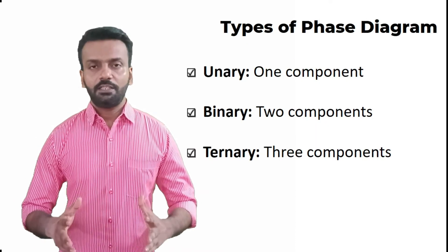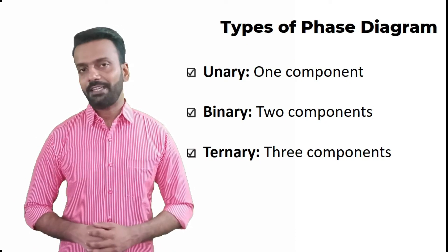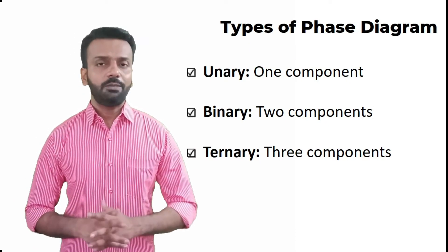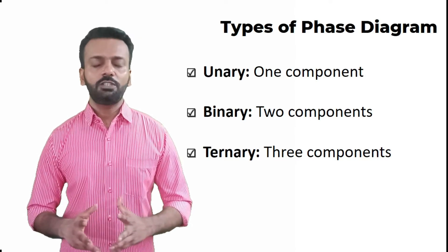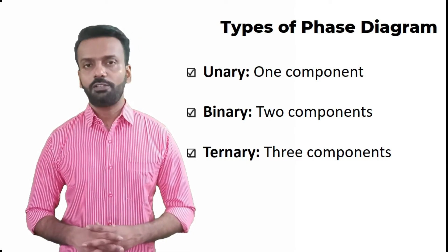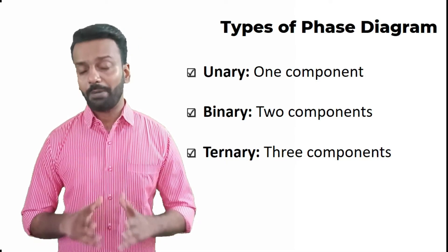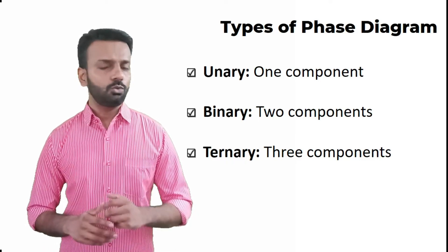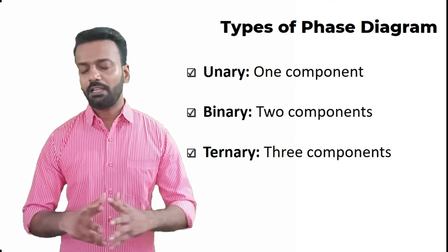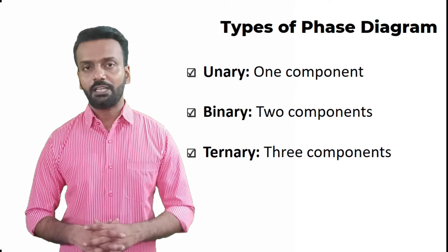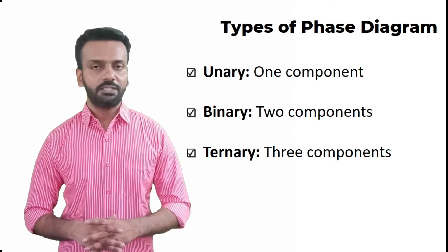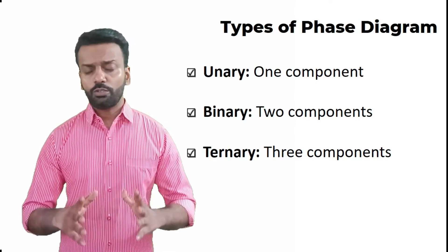There are three types of phase diagram: the unary phase diagram, which is a one-component phase diagram; the binary phase diagram, which is a two-component phase diagram; and the ternary phase diagram, which is a three-component phase diagram.